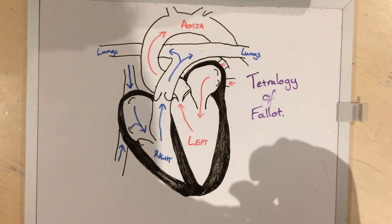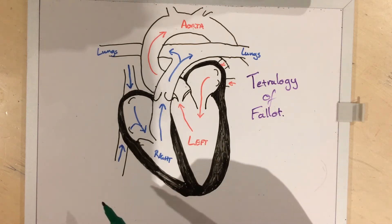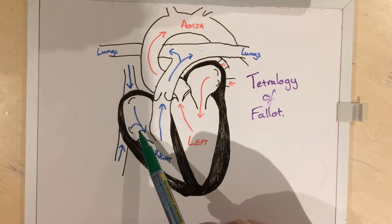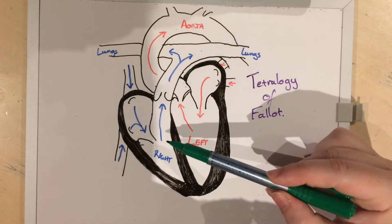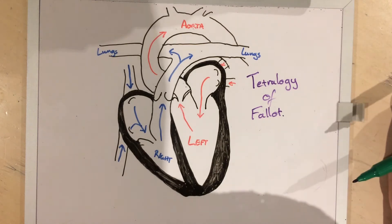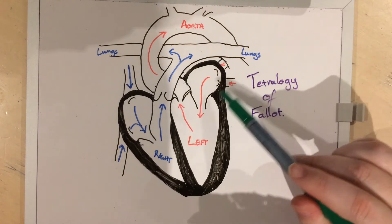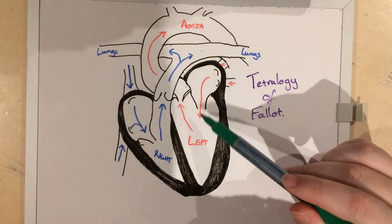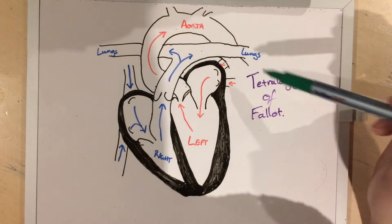But let me explain how the normal heart works so that you don't get too lost. In a normal heart, deoxygenated blood from the body, which is represented in blue, comes into the right side of the heart through the atrium and ventricle and then shoots off down the pulmonary arteries. That takes it to the lungs where it picks up all that useful oxygen and brings it back to the left side of the heart through the atrium and ventricle and off around the aorta.